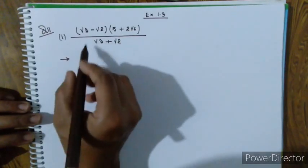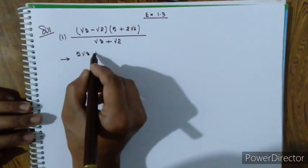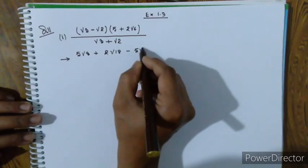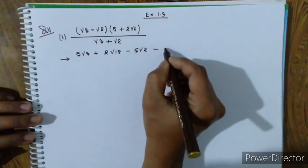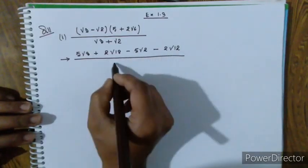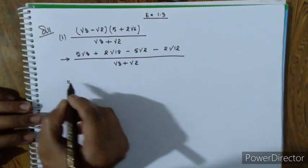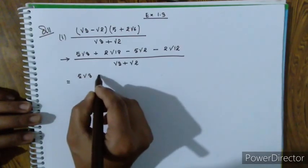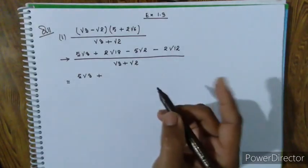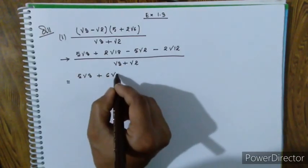5 root 3 plus 2 root 18, minus 5 root 2, minus 2 root 12, by root 3 plus root 2. Next step: see 5 root 3 plus 2 root 18. Root 18 equals 9 into 2, so root 18 equals 3 root 2, giving 6 root 2.